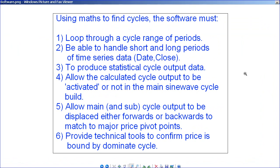The software required to find cycles must have at least six functionalities: be able to loop through a range of periods; be able to handle a short and a long data period, say a year to 30 years; obviously produce a statistical output. Once the output is produced per cycle, you might have statistics for 10 to 15 cycles, and you have to be able to select the cycles you want to combine. You might also want to move the cycle five days forward or five days back in placement, just to fit in with the major pivot points.